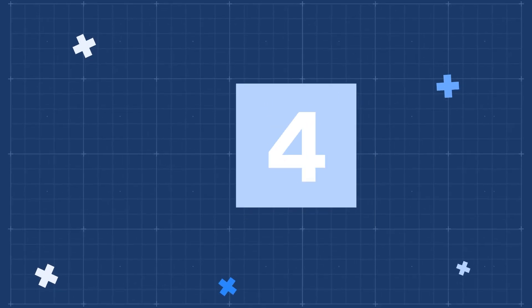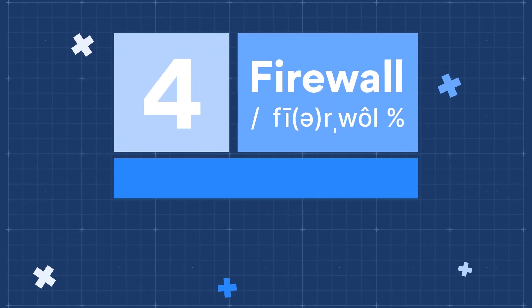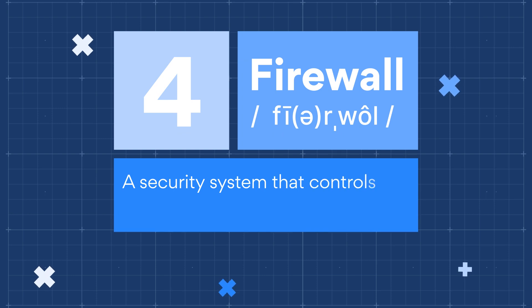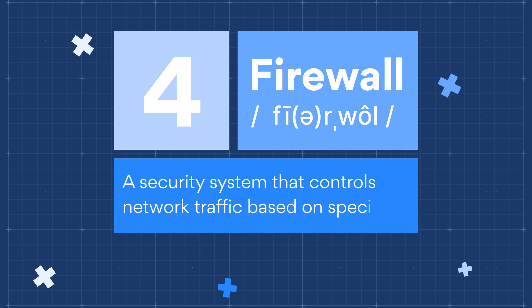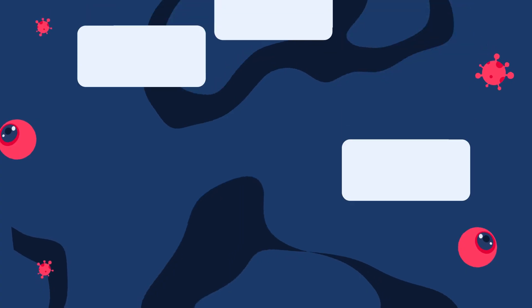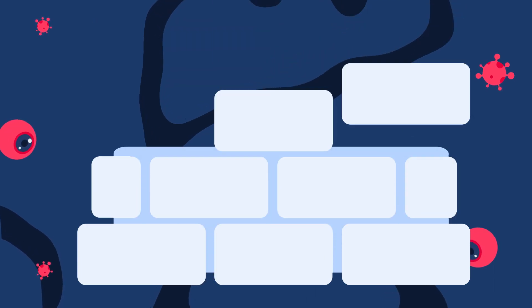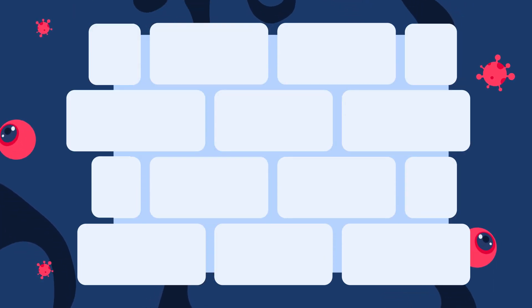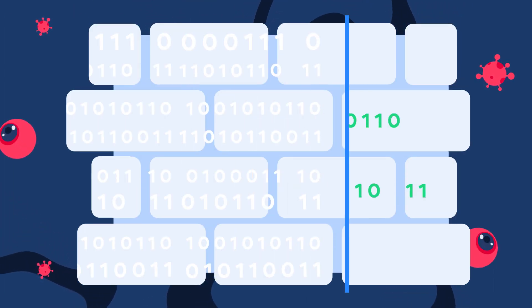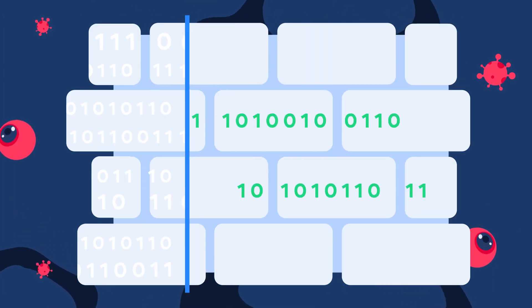Number 4: Firewall. A firewall is a security system that controls network traffic based on specified parameters. It provides network security by blocking some threats and preventing unauthorized access.